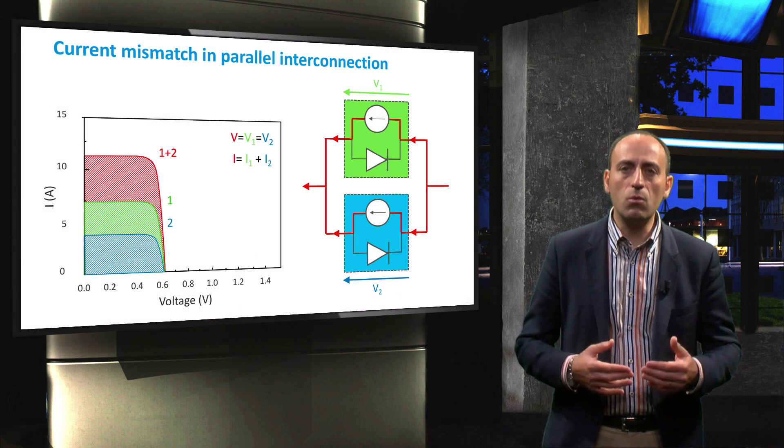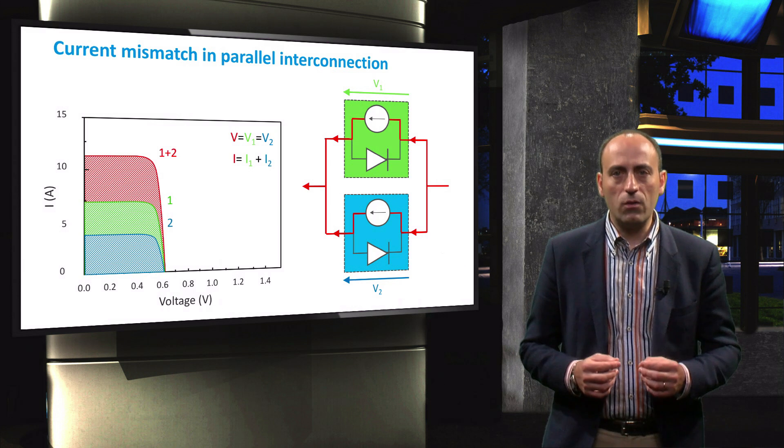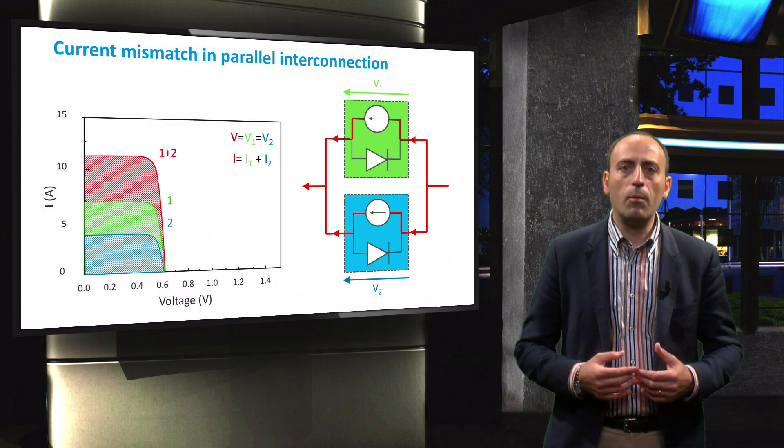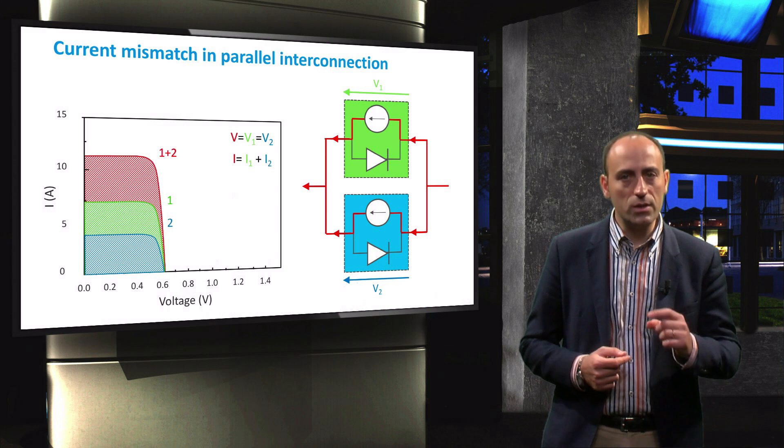For the parallel connection, it does not matter whether one of the two cells is mismatched from the illumination point of view. The only important thing is that the voltages are similar.